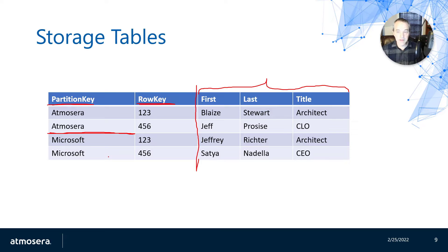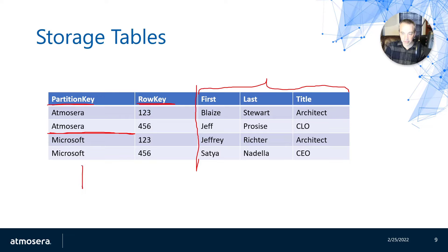The temptation might be to stick everything in a single partition and not use partition keys at all. The reason you don't want to do that is because if you have everything in a single partition, you could potentially bog down whatever storage mechanism it is with multiple requests. You're not going to get that horizontal scale if you don't have multiple partition keys in your data. So fundamentally it gets down to: how am I going to set up my partition keys to make my queries performant, and how am I going to set up my row key to make my queries work well?